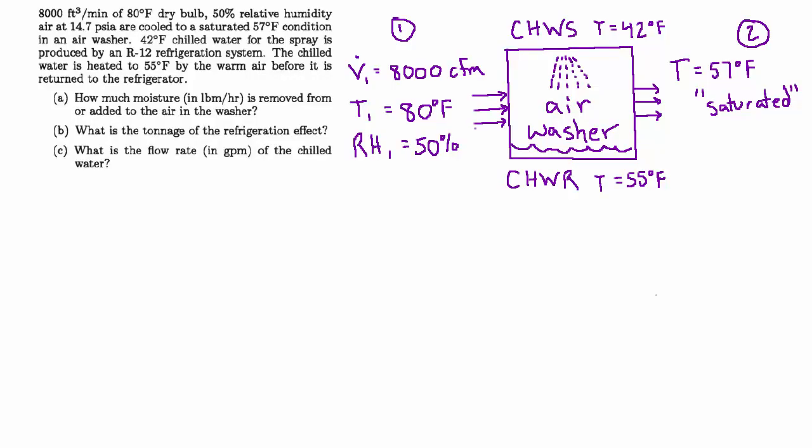101 Solved Mechanical Engineering Problems, HVAC 9. 8,000 CFM of 80-degree dry bulb, 50% relative humidity air at 14.7 PSI are cooled to a saturated 57-degree condition in an air washer. 42-degree chilled water for the spray is produced by an R12 refrigeration system. The chilled water is heated to 55 degrees by the warm air before it is returned to the refrigerator.